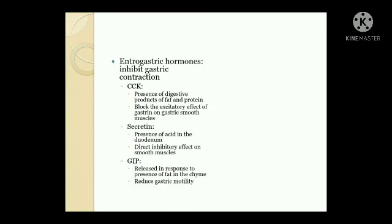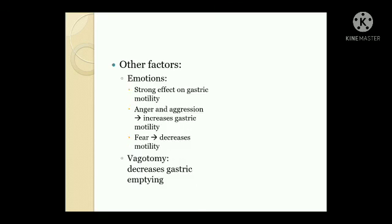Enterogastric hormones inhibit gastric contraction. Cholecystokinin is released in response to digestive products of fat and protein and blocks excitatory effects of gastrin on gastric smooth muscles. Secretin is released in response to acid in the duodenum and has a direct inhibitory effect on smooth muscles. GIP (gastric inhibitory peptide) is released in response to fat in the chyme and reduces gastric motility. Other factors include emotions — anger and aggression increase gastric motility, whereas fear decreases it. Vagotomy decreases gastric emptying. This concludes motor functions of the stomach.